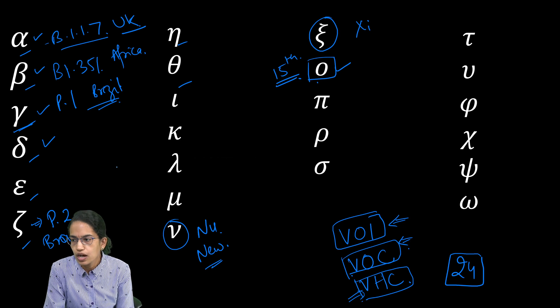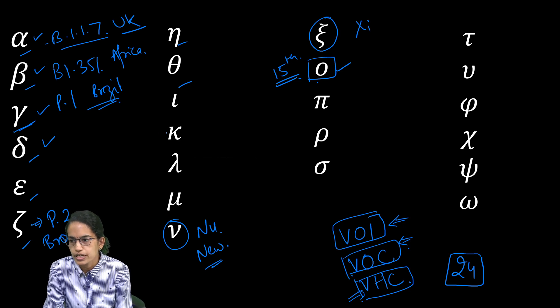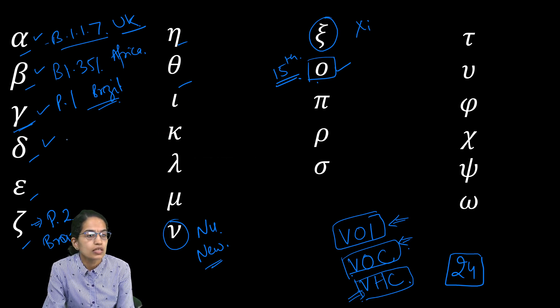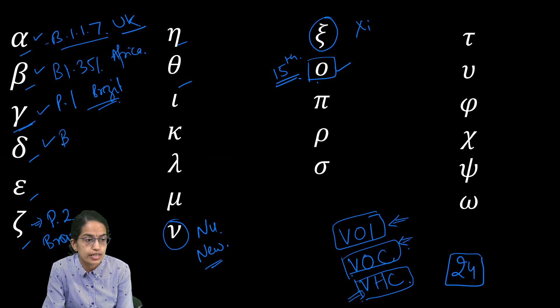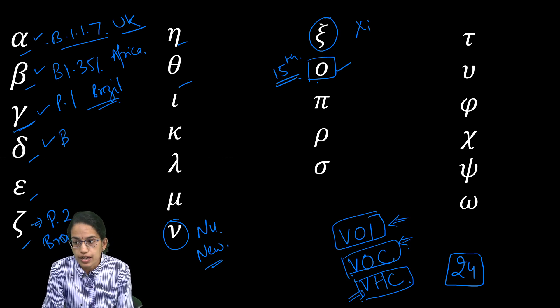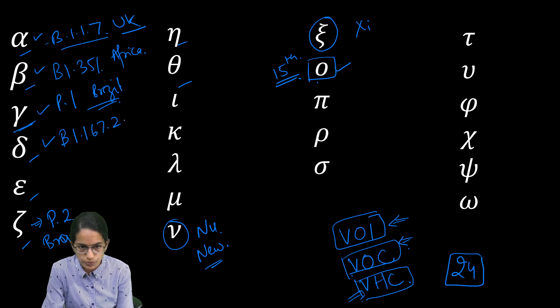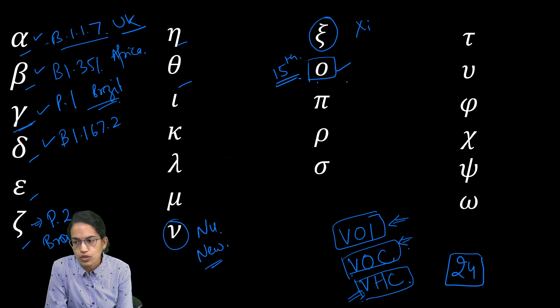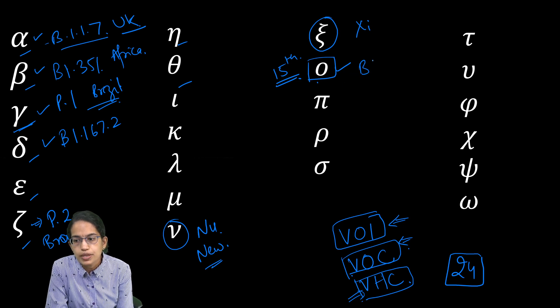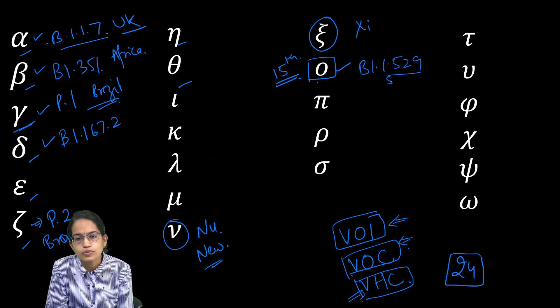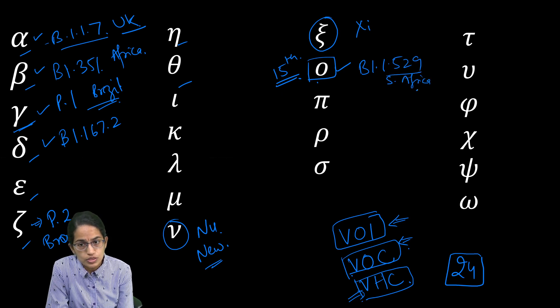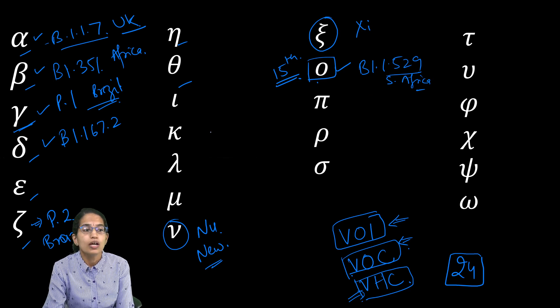Then we have the next variant which was the delta variant. The origin country we know clearly, it was India and this was B1.617.2. The latest one which is omicron is B1.1.529 and this is from South Africa. So these are the variants of concern.